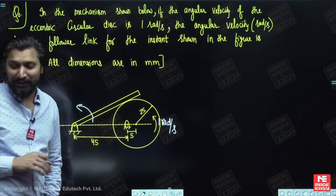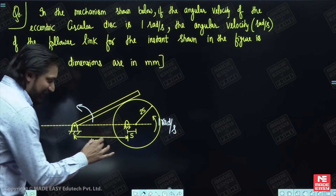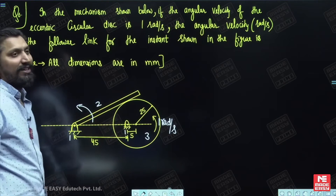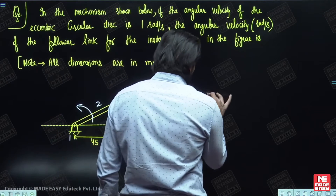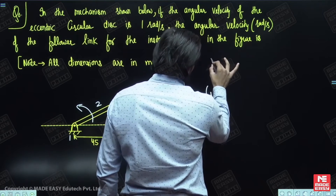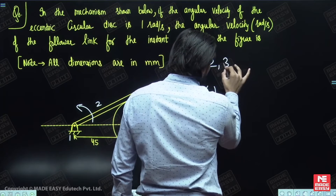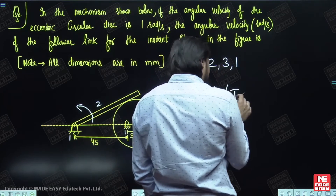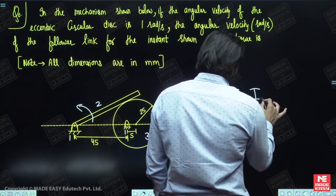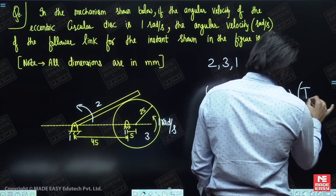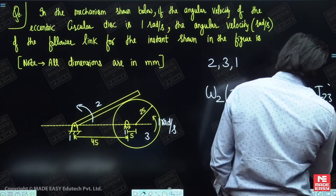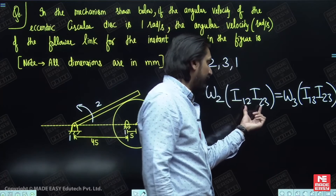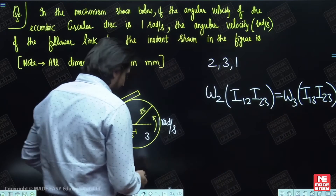Here you have to use the Aronhold-Kennedy angular velocity ratio theorem. Three links are there: first is the fixed link, second is the oscillating follower, and third is the eccentric circular disc cam. Omega of the third link is given, omega of the second link is asked. You can use the Aronhold-Kennedy Angular Velocity Ratio Theorem: ω₂ × (distance I₁₂ to I₂₃) = ω₃ × (distance I₁₃ to I₂₃). This question is about calculating these instantaneous centers, because ω₃ is given and it is easy to locate them.